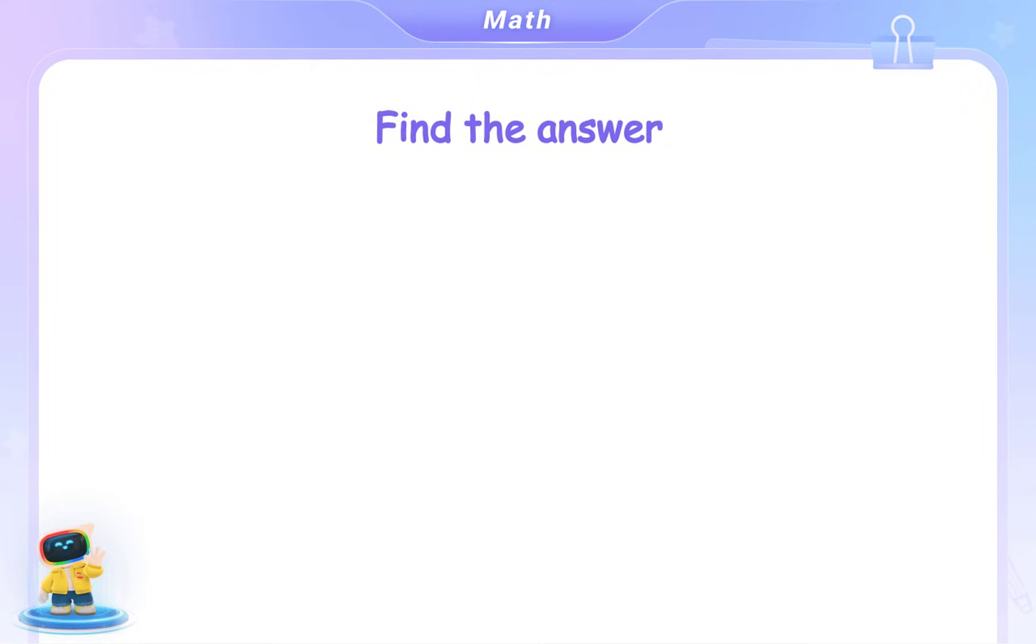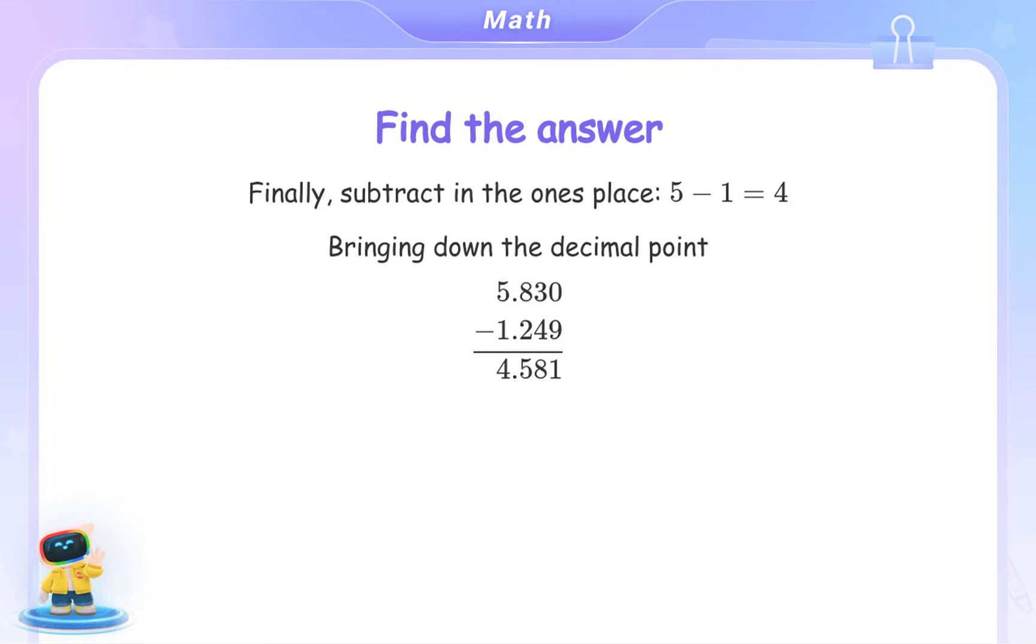Find the answer. Finally, in the ones place, 5 minus 1 equals 4. Bring down the decimal point straight into our answer. 5.830 minus 1.249 equals 4.581. Therefore, the answer is 4.581.